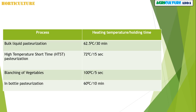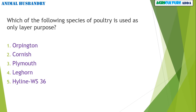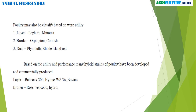In animal husbandry, which of the following species of poultry is used as only a layer purpose — Orpington, Cornish, Plymouth, Leghorn, or Hyline WS-36? The classification of poultry by utility: layer — Leghorn and Minorca; broiler — Orpington and Cornish; dual purpose — Plymouth and Rhode Island Red; hybrid layer strains — Babcock 300 and Hyline WS-36.